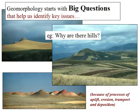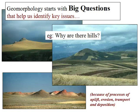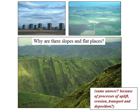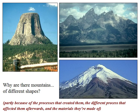We can begin the course with some big, simple questions and some big, simple answers. For example, why are there hills? We could say there are hills because of processes like uplift, erosion, and deposition, acting on materials at the Earth's surface. Why are some places flat? For the same reasons — processes acting on surface materials. And why is there so much variety? Why aren't all the hills the same? Because they're created and modified by different processes, for different amounts of time, and they're made of different materials.